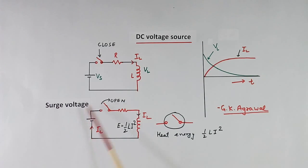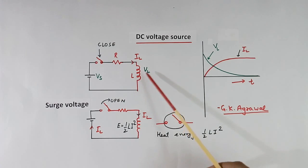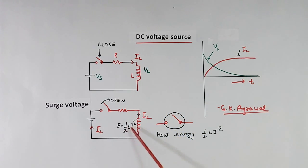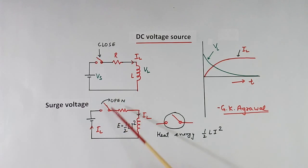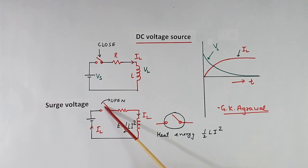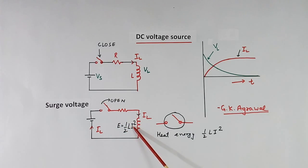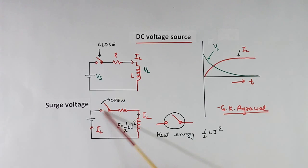Surge voltage: when the switch is closed, after some time current flows, so this inductor will store some energy. That energy is equal to half L I squared. Now suppose you want to open the switch again — current cannot become zero suddenly because there is stored energy. This energy has to go somewhere. So when we open the switch, current will continue to flow through the open switch, which has very high resistance, and this current multiplied by the high resistance means high voltage will develop, and flashover will occur. Because of flashover, heat will be generated, and this energy will convert to heat energy until the full energy, equal to half L I squared, is dissipated and current becomes zero.